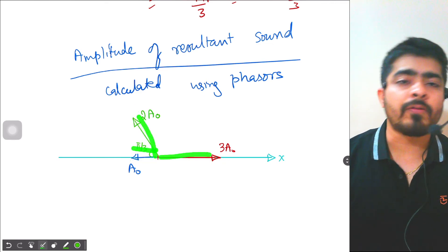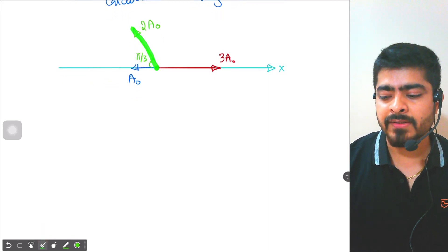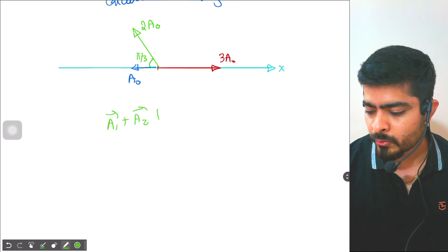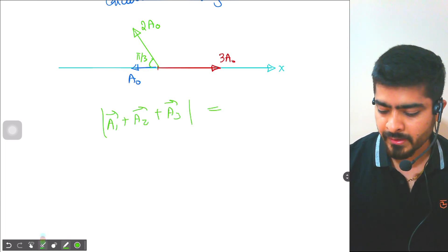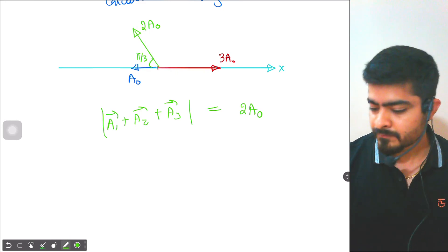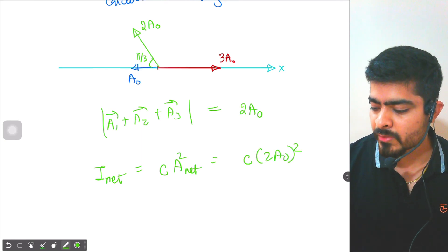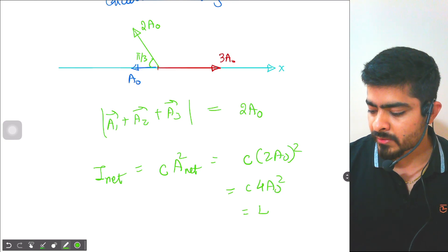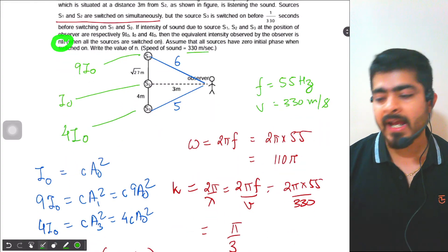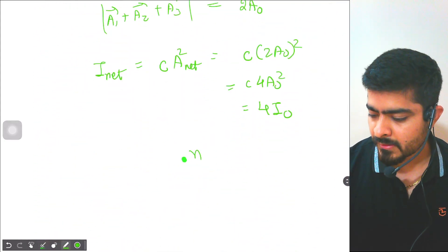The resultant intensity I_net = c × (2a₀)² = c × 4a₀² = 4I₀. The question asks: if the net intensity is nI₀, what is the value of n? The answer is n = 4.